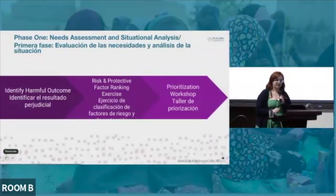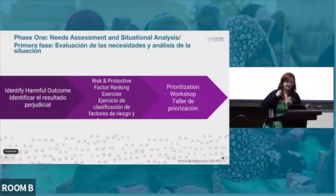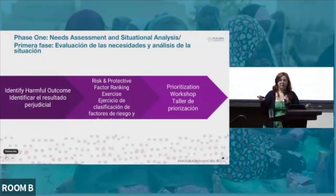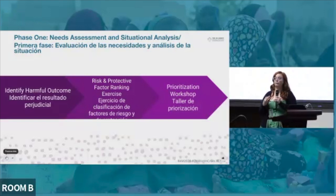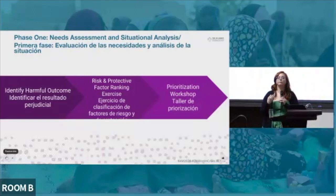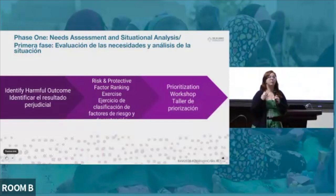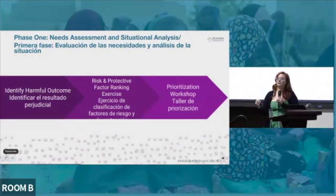The first phase was to do a needs assessment and situational analysis. But first we needed to ask ourselves: what harmful outcome are we targeting? What harm are we seeking to prevent? We conducted an extensive desk review of needs assessments, humanitarian needs overviews, HRPs, and other available resources, and consulted with our project teams and communities to determine what were the priority harmful outcomes. Once we had those, we needed to identify the risk factors driving those outcomes and the protective factors that helped keep children safe.